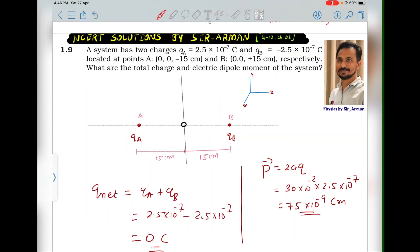Problem 1.9: A system has two charges, QA = 2.5×10^-7 C and QB = -2.5×10^-7 C, located at positions (0, 0, -15 cm) and (0, 0, +15 cm). What are the total charge and electric dipole moment of the system?